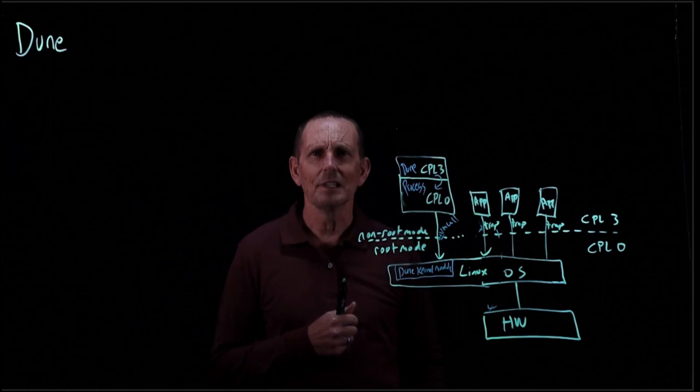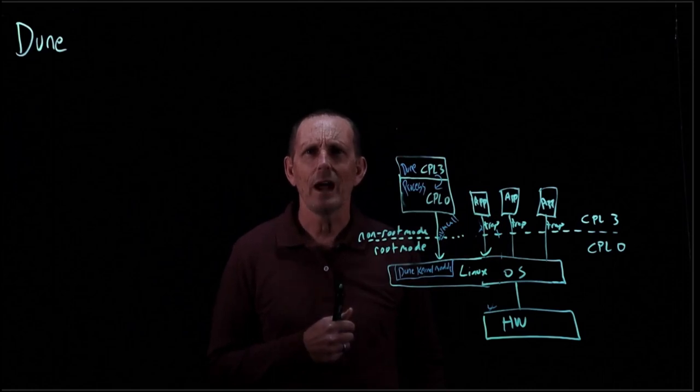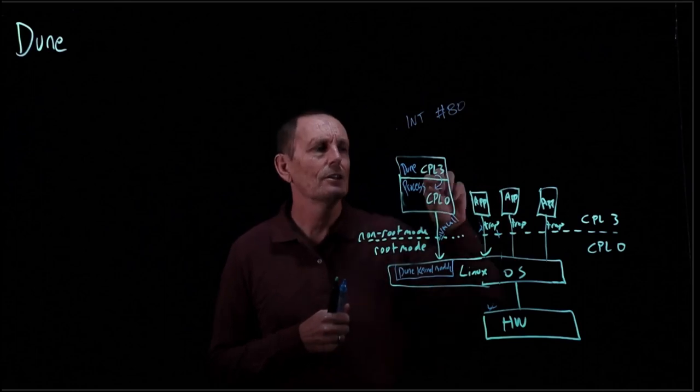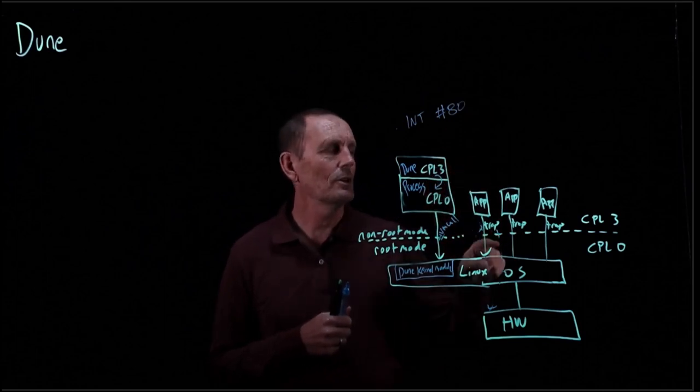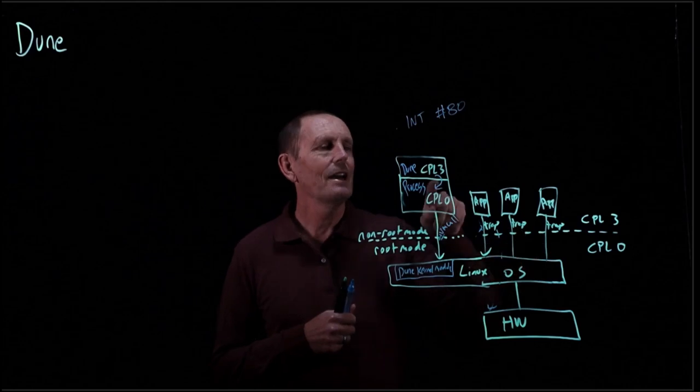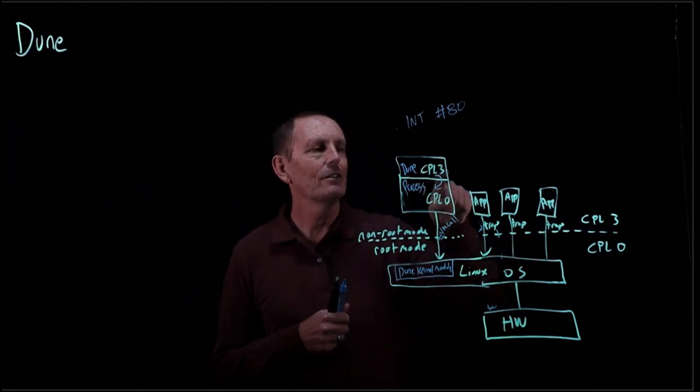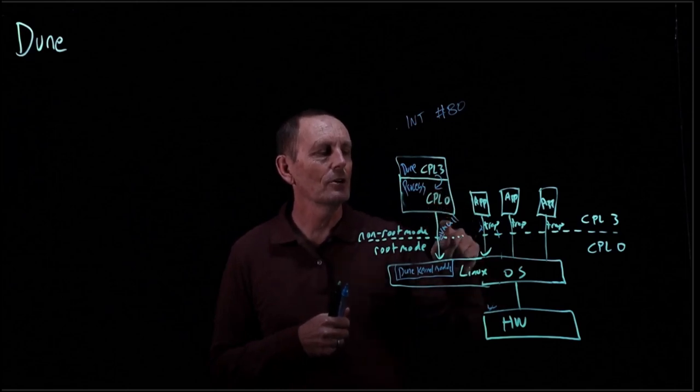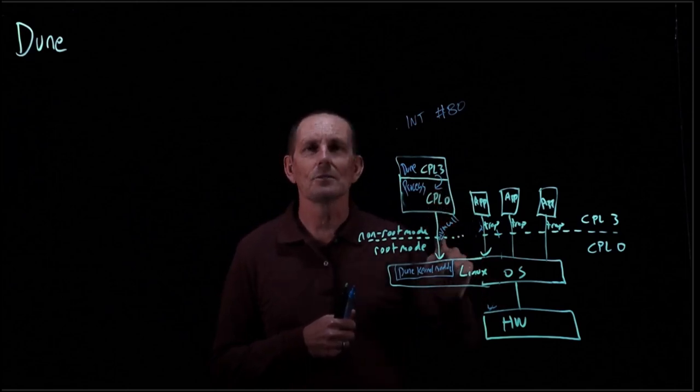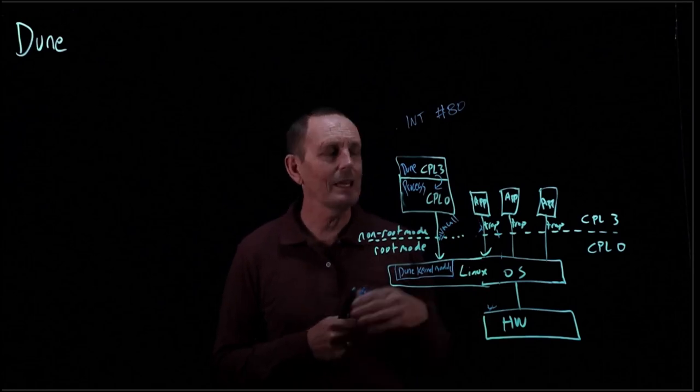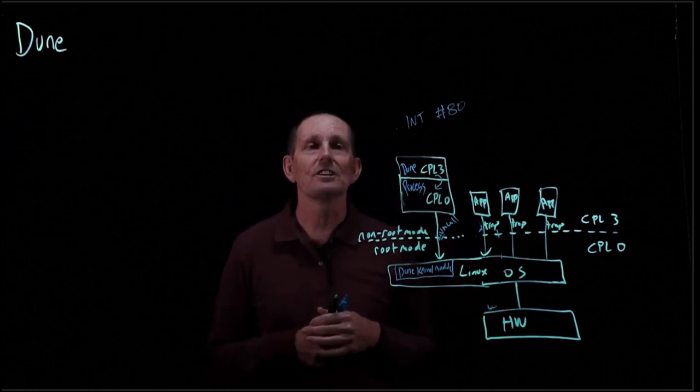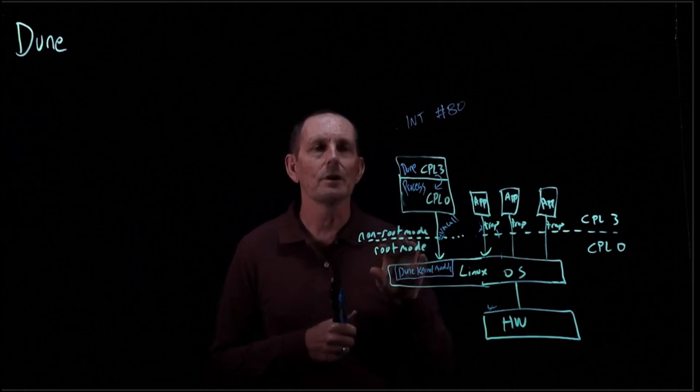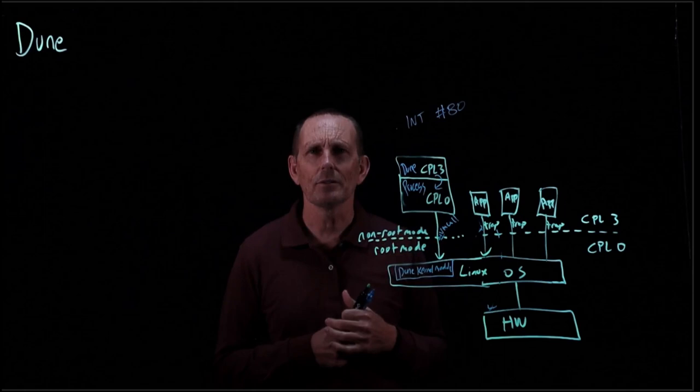It has memory associated with it. It can make system calls. The only difference is instead of using a trap to do it, it uses VM call, because the traps will actually go from CPL3 to CPL0. In Linux, I believe the trap interrupt 80 is what's used to cause a system call. In the case of a DUNE process, an interrupt 80 would actually just take from CPL3 to CPL0. So there's another way to make a system call, which is doing a VM call. And it's fully isolated using the root mode, non-root mode, instead of using the CPL0 or CPL3.